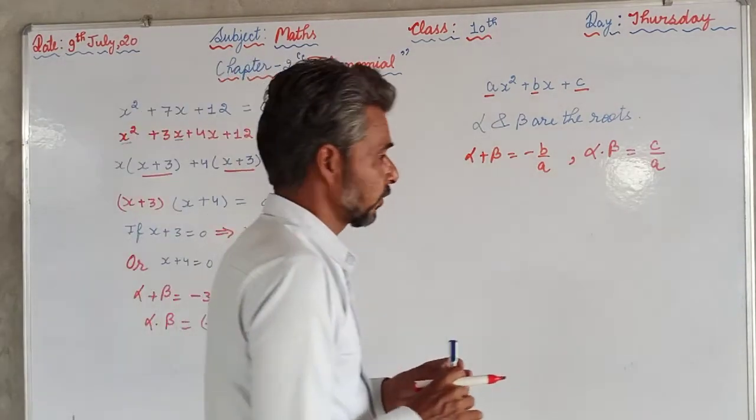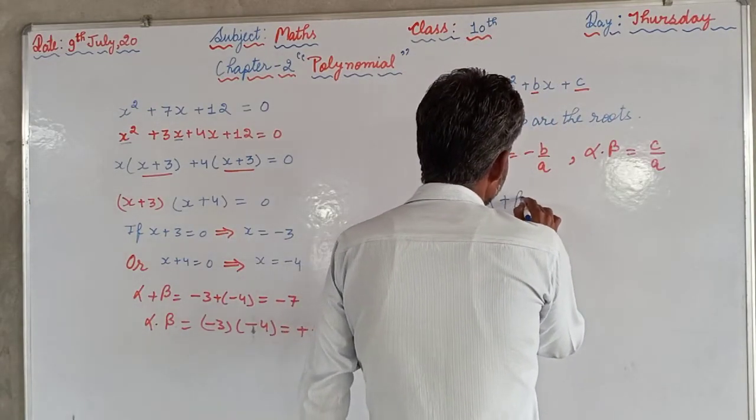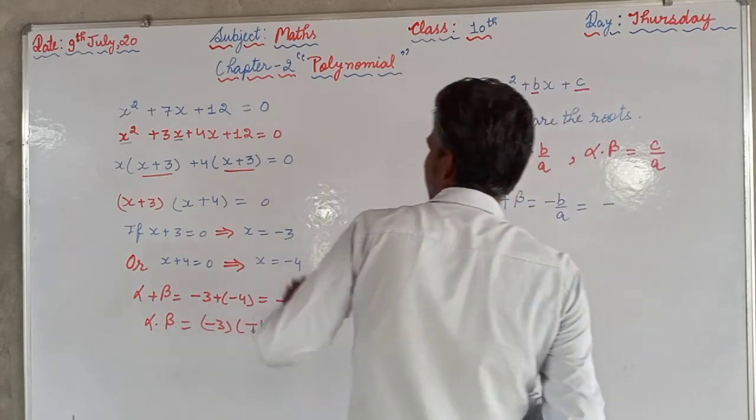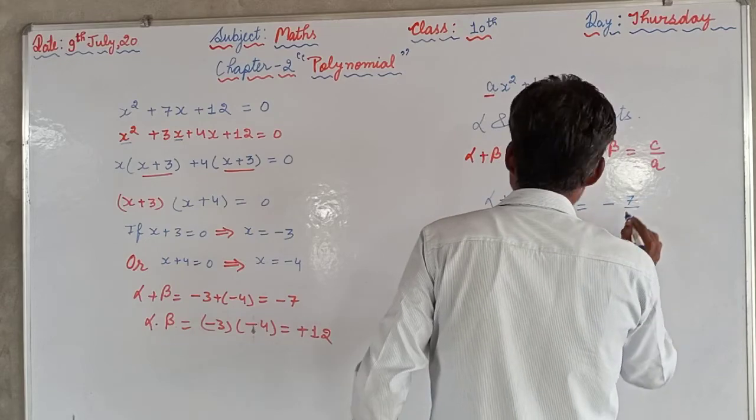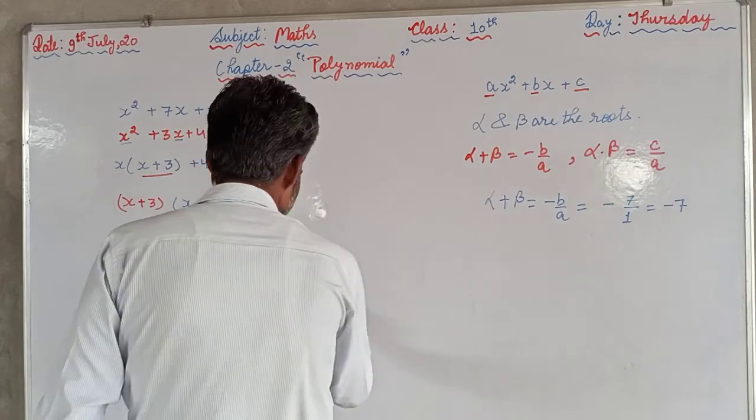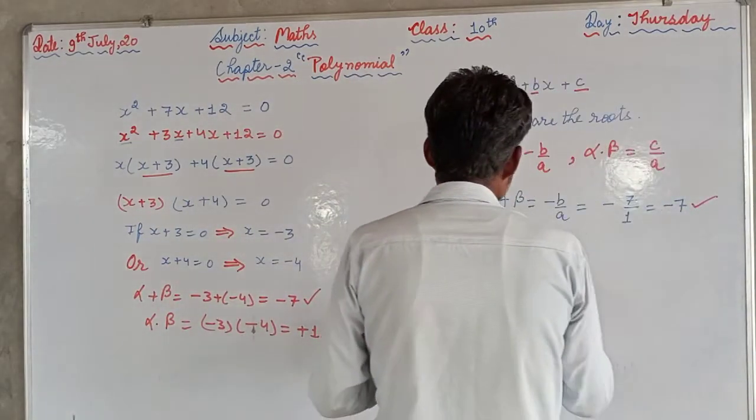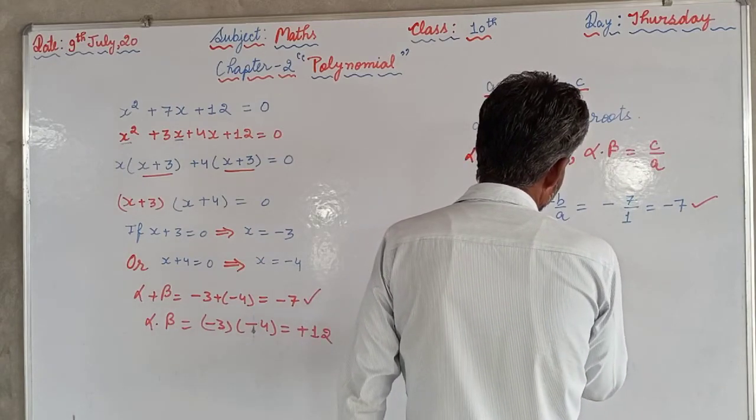Now we will verify the relation from here. α + β equals to -b/a. b is 7 upon a, a is 1, means -7. So this is verified. -7 is there, -7 is here. Now again, α × β equals c/a.